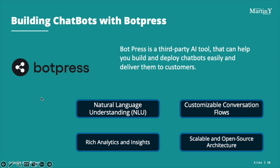Botpress is a third-party tool that uses AI to build chatbots. You can integrate it with natural language understanding and customize chat flows graphically. Today we're still going to write some code, but we'll also do the graphical part so you see the whole process.